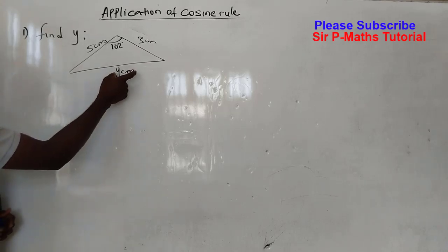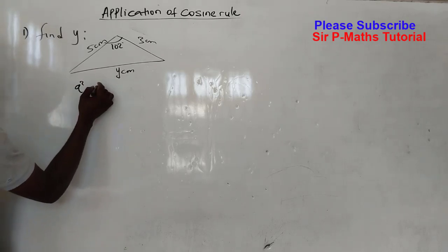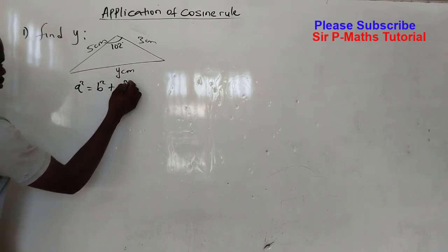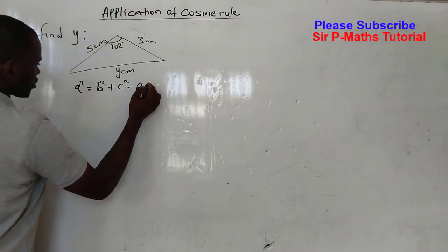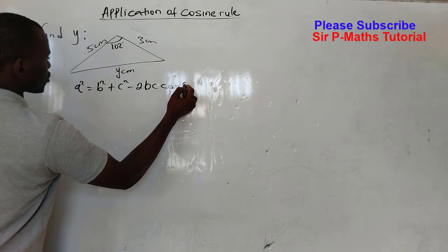In the second question we are required to find the side facing the angle, that is y. So let us write down our formula first: a² = b² + c² - 2bc cos A.